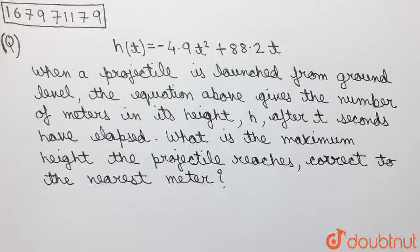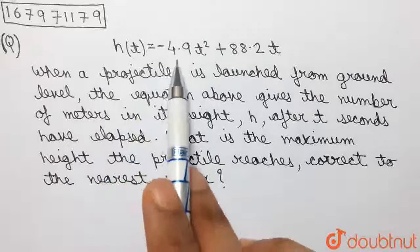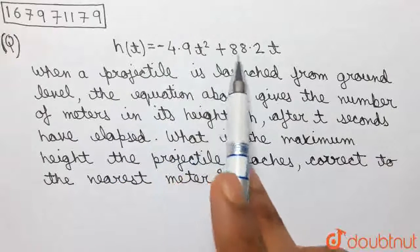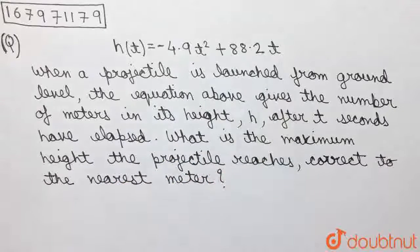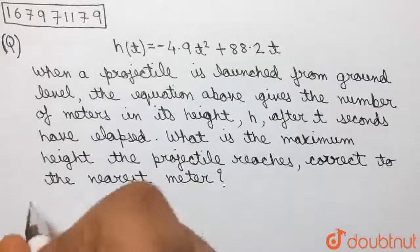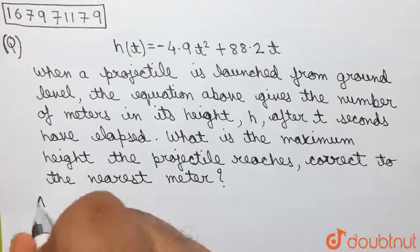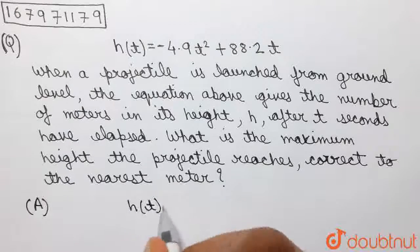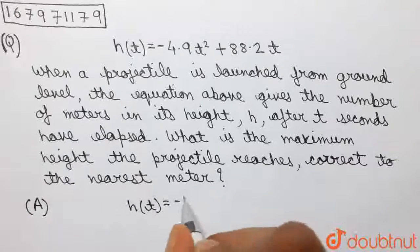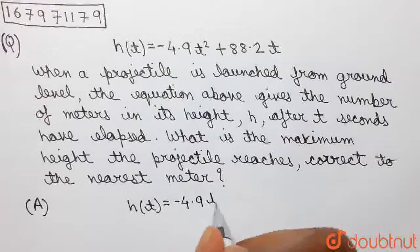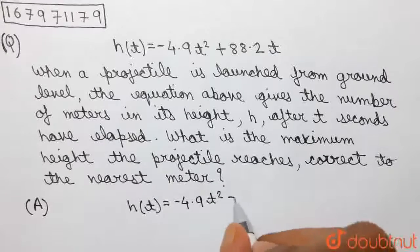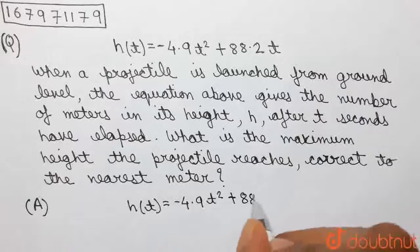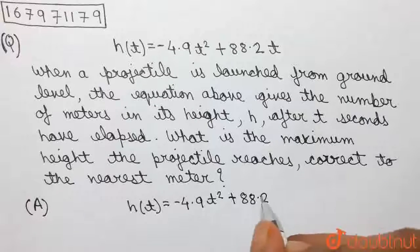So, the function that has been given in the question is h(t) = -4.9t² + 88.2t. Writing down the given function: h(t) = -4.9t² + 88.2t.